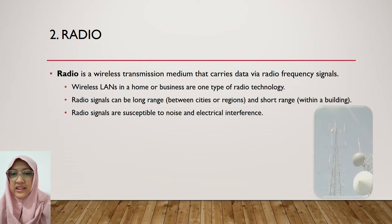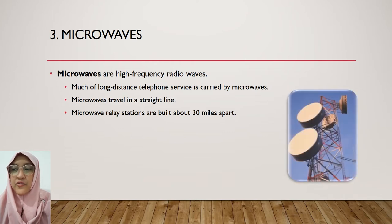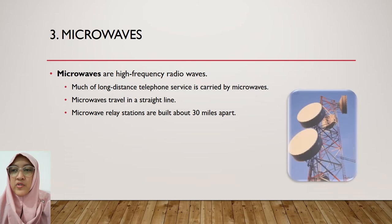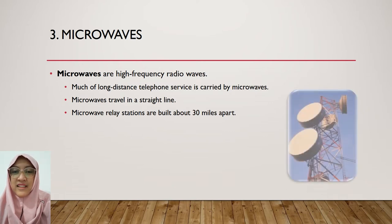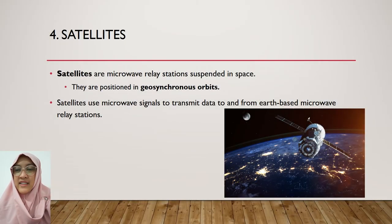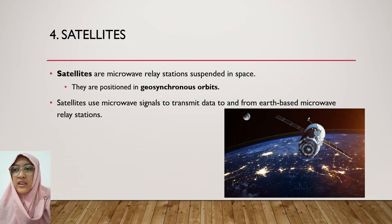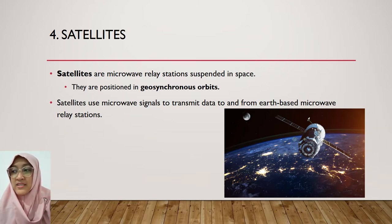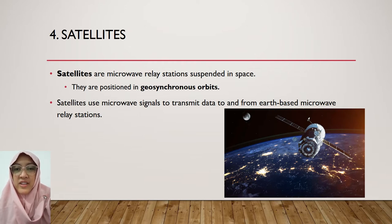The third is microwave. Microwaves are high frequency radio waves. Much of long distance telephone service is carried by microwave. Microwaves travel in a straight line, and microwave relay stations are built about 30 miles apart. Next is satellite. Satellites are microwave relay stations suspended in space. They are positioned in geosynchronous orbits. Satellites use microwave signals to transmit data to and from Earth-based microwave relay stations. In summary, satellites are like microwave but placed in space.